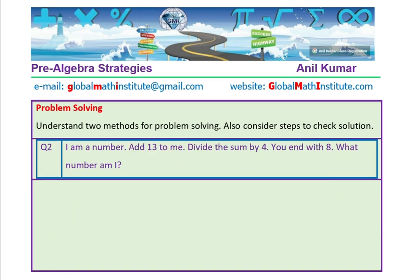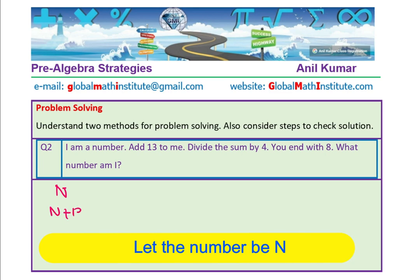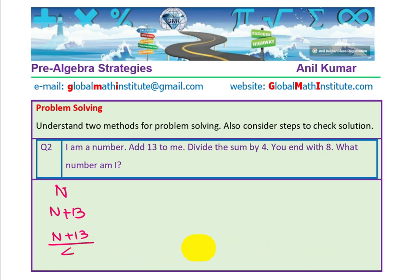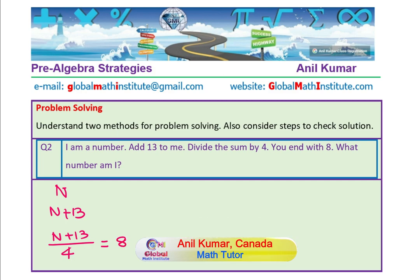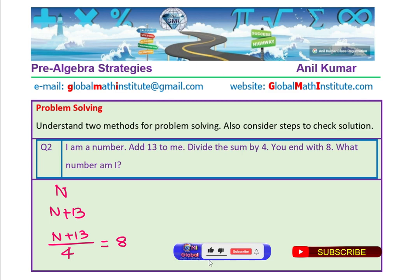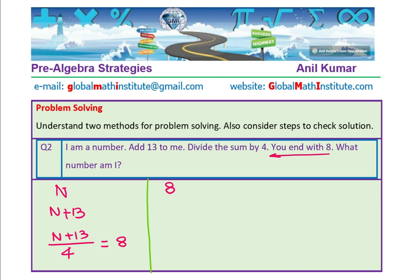Question number two also begins: I am a number, so let's say I am number n. Add 13 to me — I am going to add 13 to this number. Then it says divide the sum by 4, so I divide the sum of n and 13 by 4. And it says you end up with 8, so this equals 8. Now, shall we do reverse calculation? We start at 8 and go backwards. Divide the sum by 4 — so the reverse of divide is multiply.